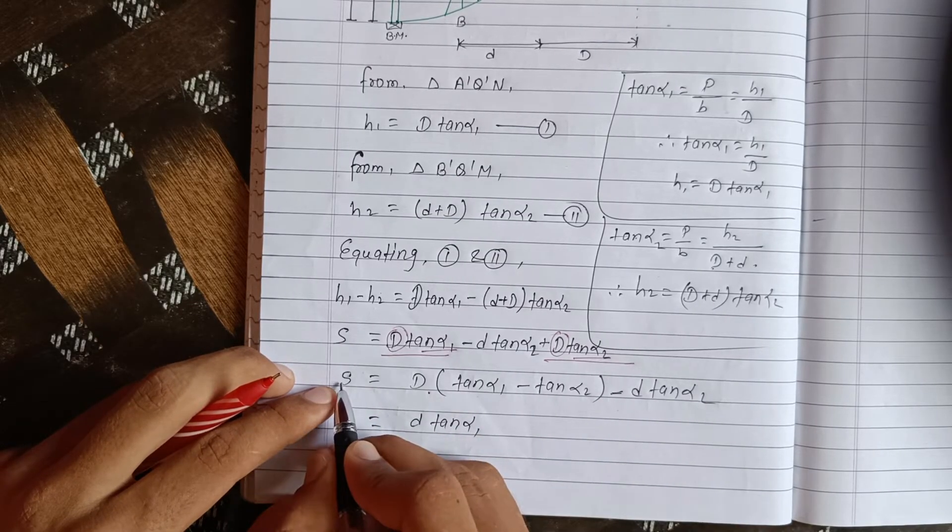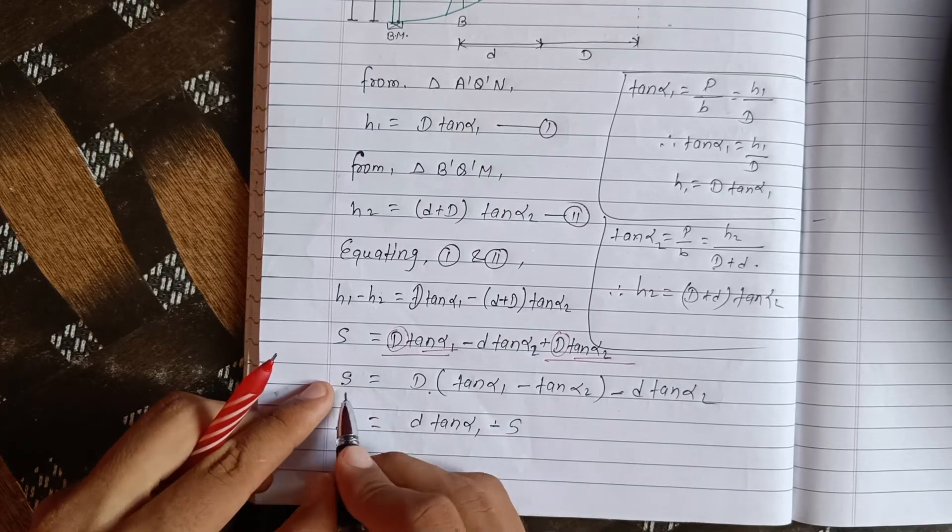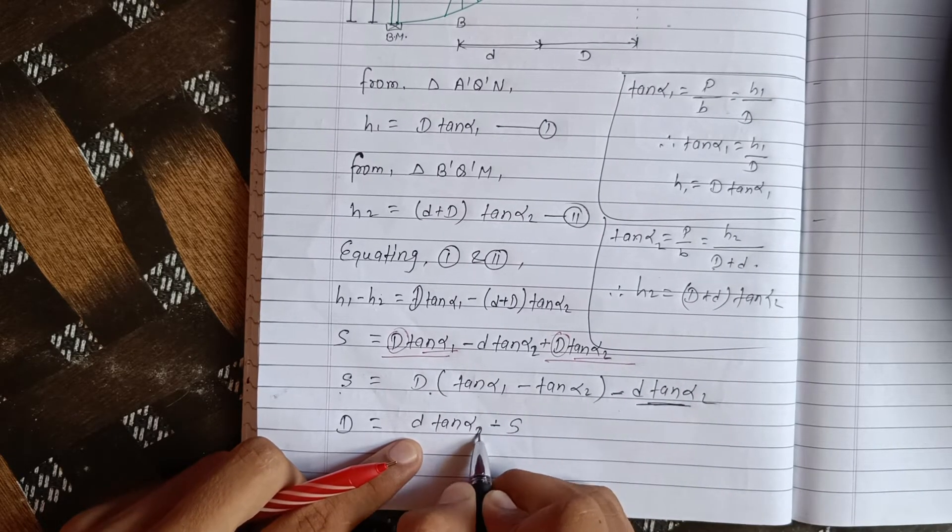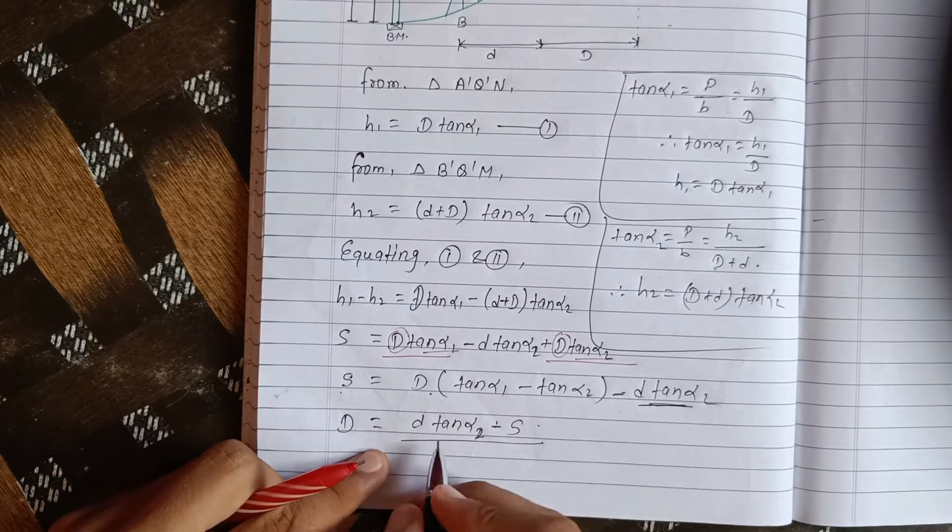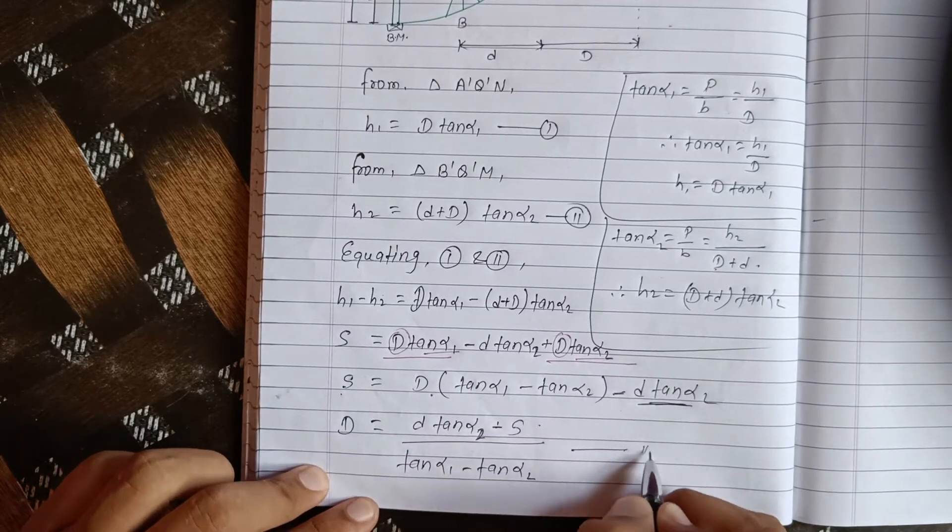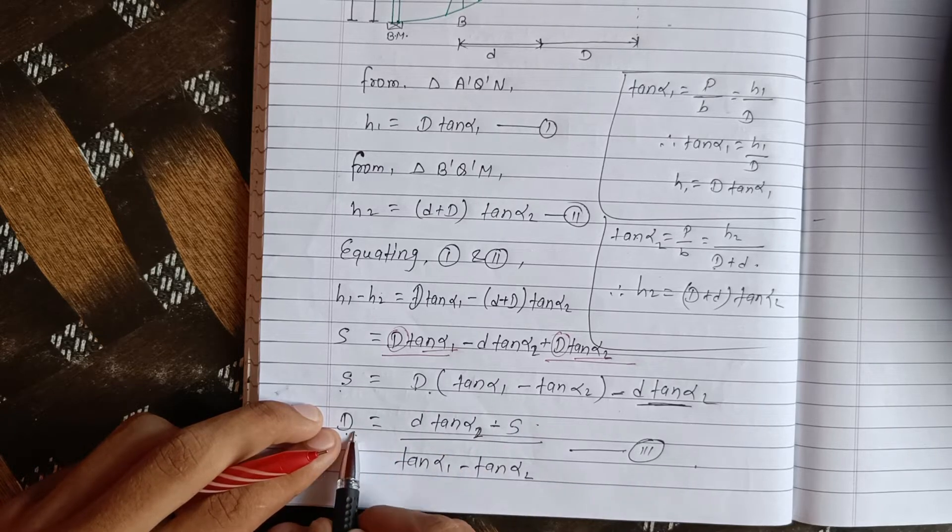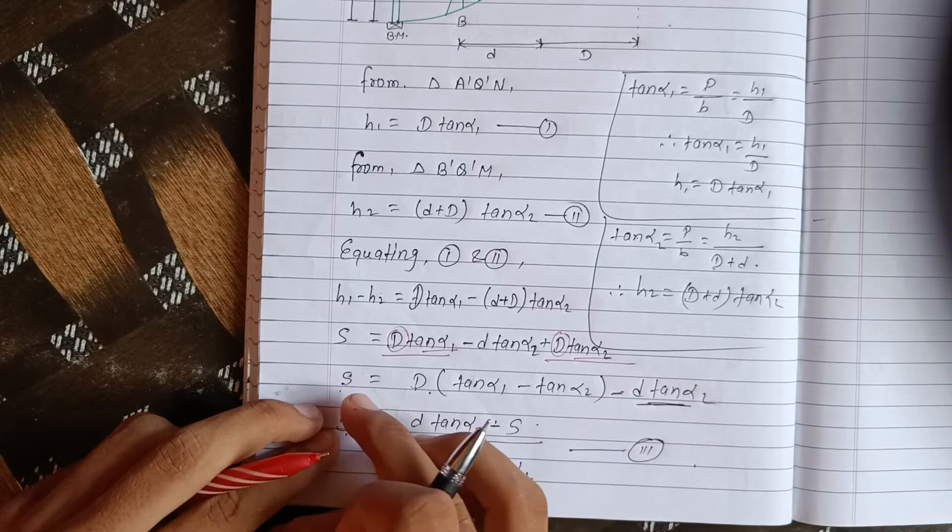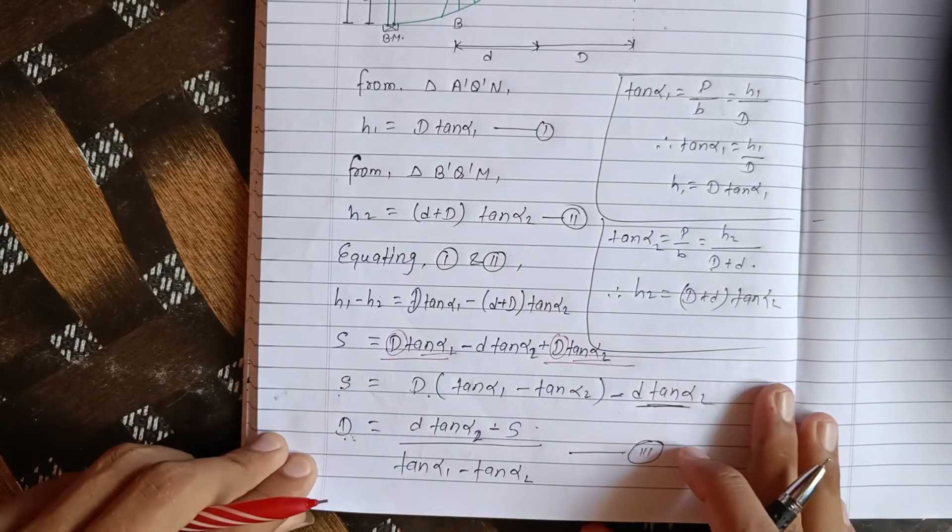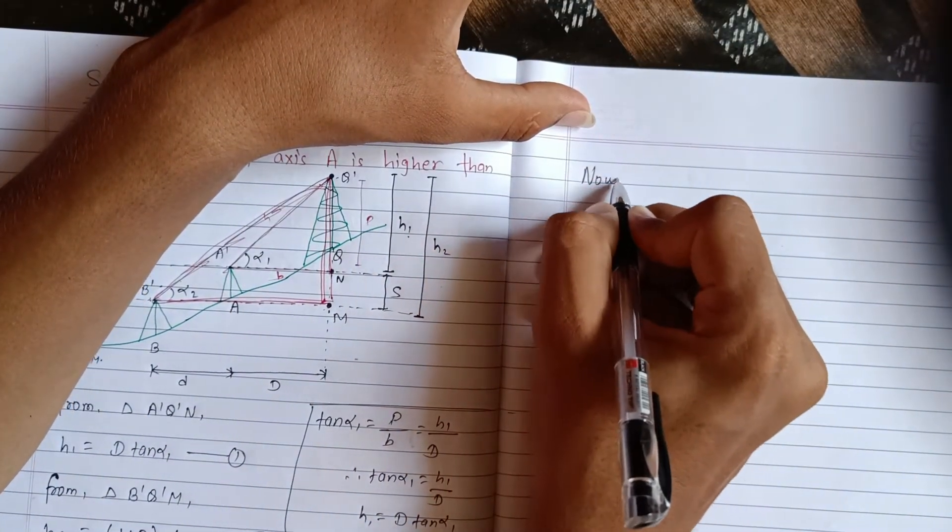Taking the positive and negative signs into account, we get tan alpha 1 minus tan alpha 2. This is our key conclusion. D equals S upon tan alpha 1 minus tan alpha 2.